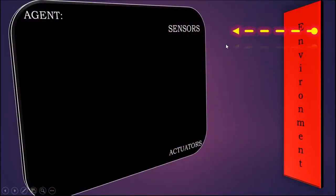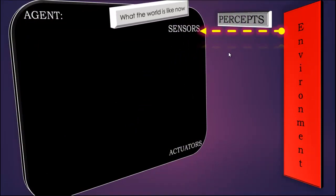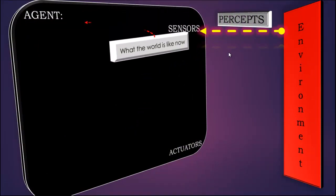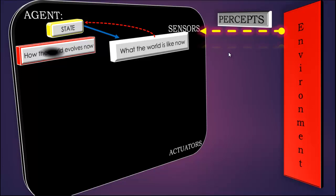The model-based agent takes input from the environment through its sensors in terms of percepts. It's asking the question to its sensors: what is the world like now? Then the status of the environment goes to the agent's internal state.